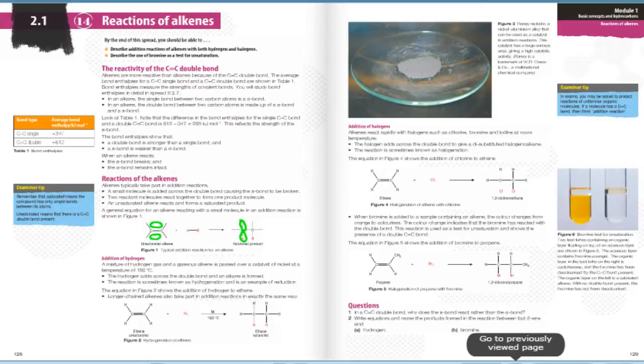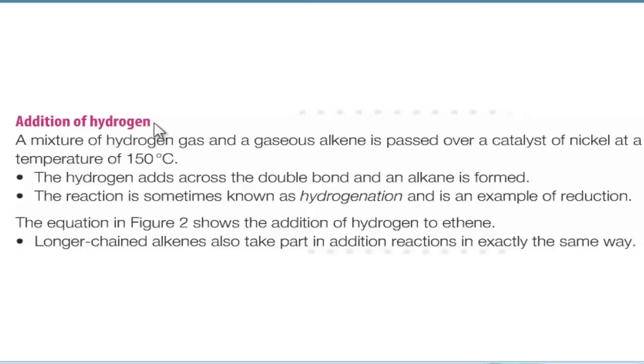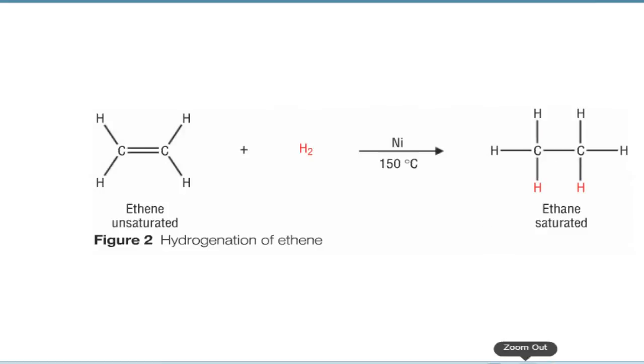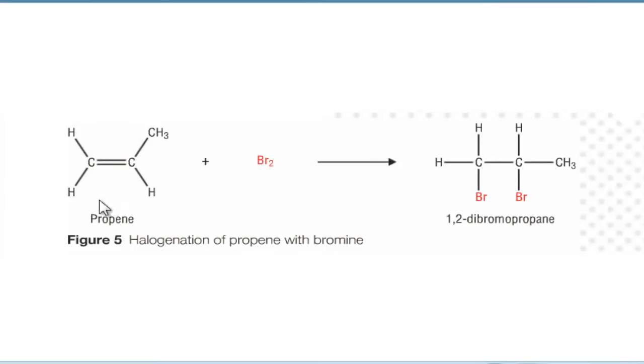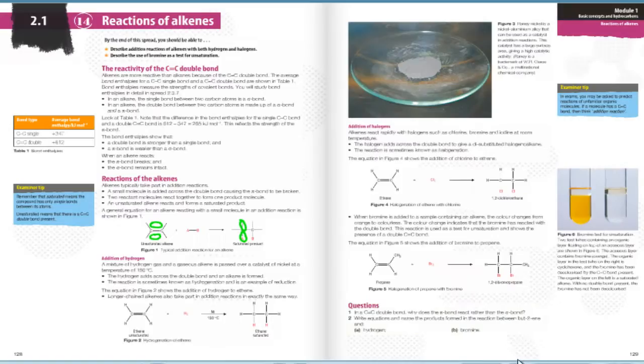If we move back and look at the addition of hydrogen now, a mixture of hydrogen gas and gaseous alkenes is passed over a catalyst of nickel at a temperature of exactly 150 degrees. The hydrogen adds across the double bond and the alkane is formed. The reaction is sometimes known as hydrogenation. This is an example of reduction. If we look here, it forms a saturated ethane molecule. The addition of halogens: we add a halogen to ethene and it forms 1,2-dichloroethane. This breaks the bond and forms this. If we look at the halogenation of propene with bromine, the same thing happens. Only 1,2-dibromopropane forms. The CH3 chain is just to simplify the structure.